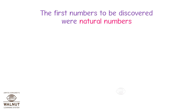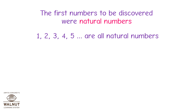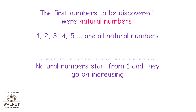The first numbers to be discovered were natural numbers. 1, 2, 3, 4, 5, etc. are all natural numbers. There is no zero in natural numbers. Natural numbers start from 1 and they go on increasing.